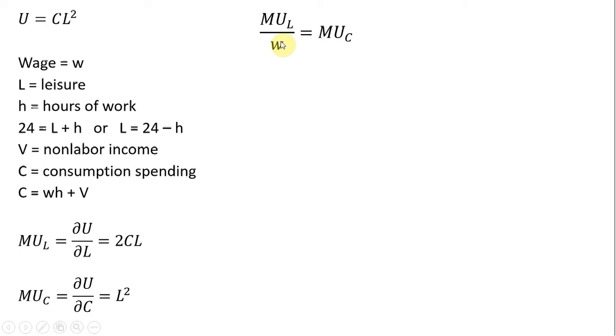To maximize utility, this condition must hold: the marginal utility of leisure divided by the wage equals the marginal utility of consumption. Substituting in what we know here, so the marginal utility of leisure is 2CL divided by W, and the marginal utility of consumption is just L squared.